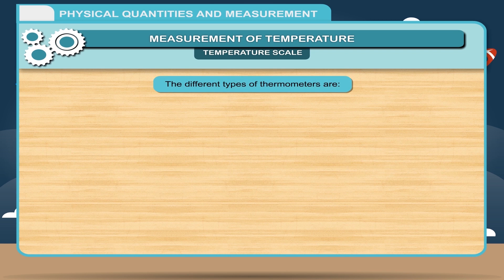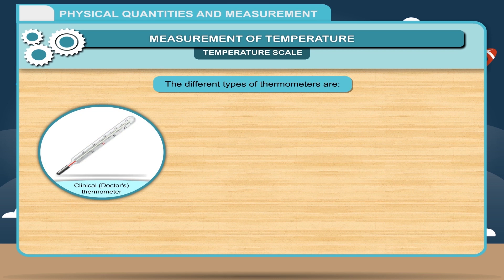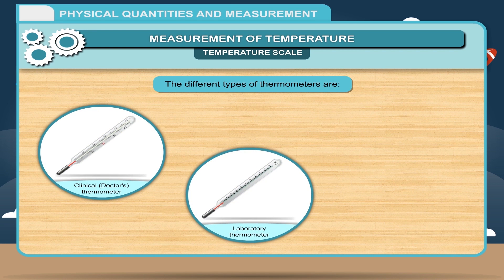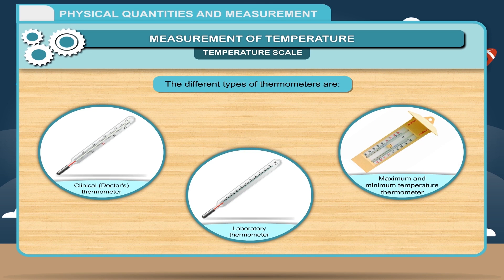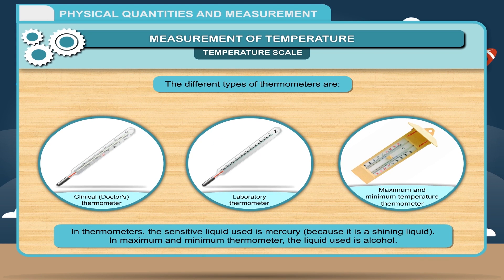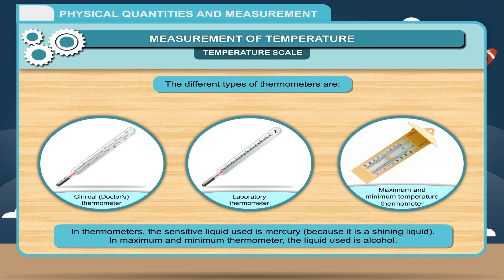The different types of thermometers are: 1. Clinical Doctor's Thermometer, 2. Laboratory Thermometer, 3. Maximum and Minimum Temperature Thermometer. In thermometers, the sensitive liquid used is mercury because it is a shining liquid. In the maximum and minimum thermometer, the liquid used is alcohol.